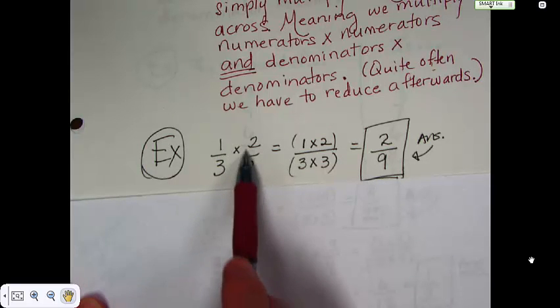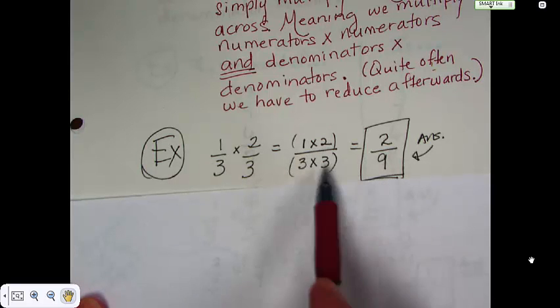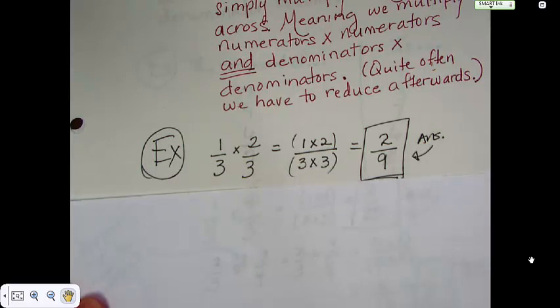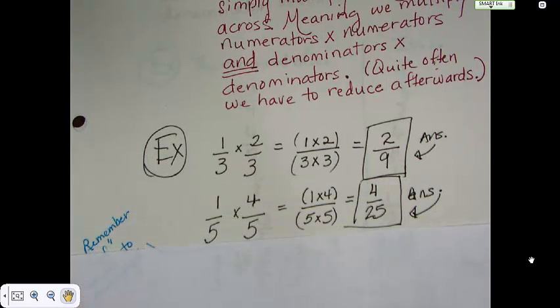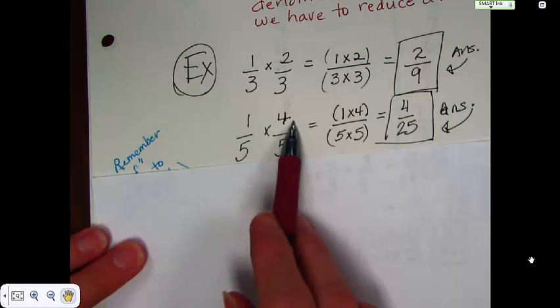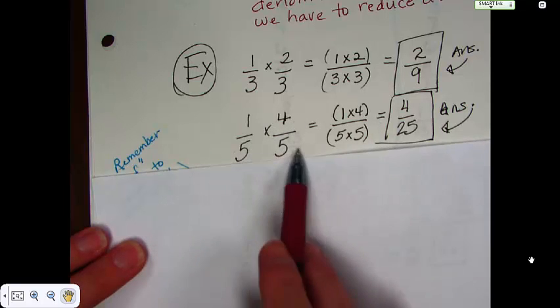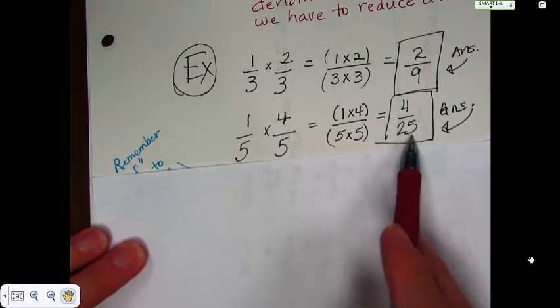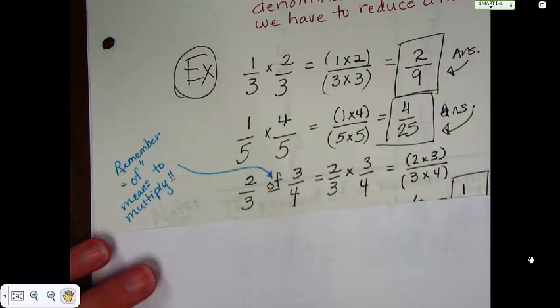Remember, this is multiplication. We multiply. We don't keep the 3 as a denominator. Now we have another one. Same denominators again. 1 times 4 over 5 times 5 ends up to be 4 over 25.